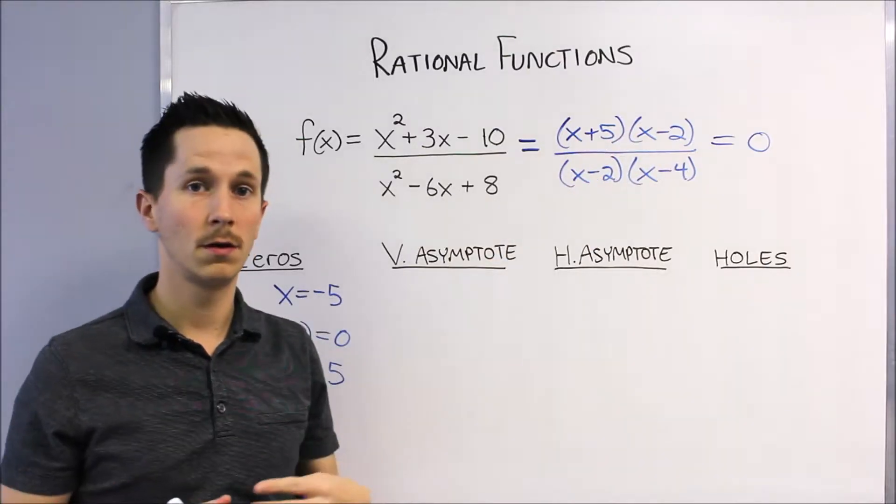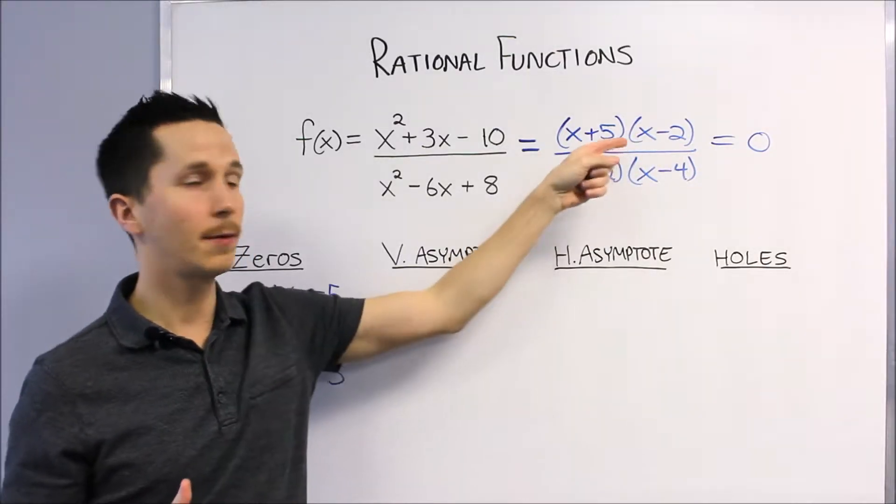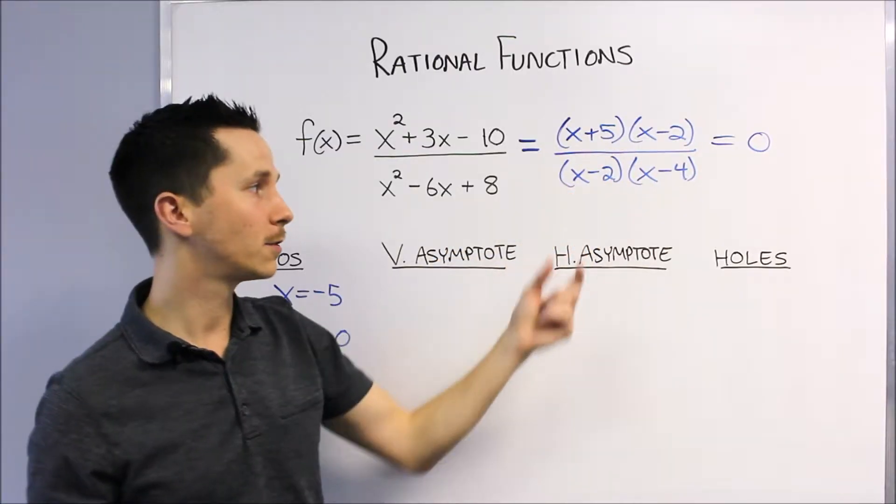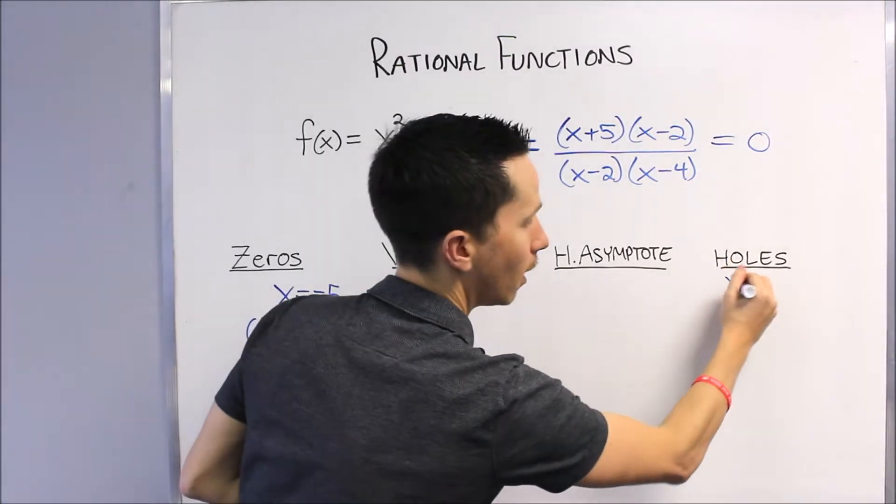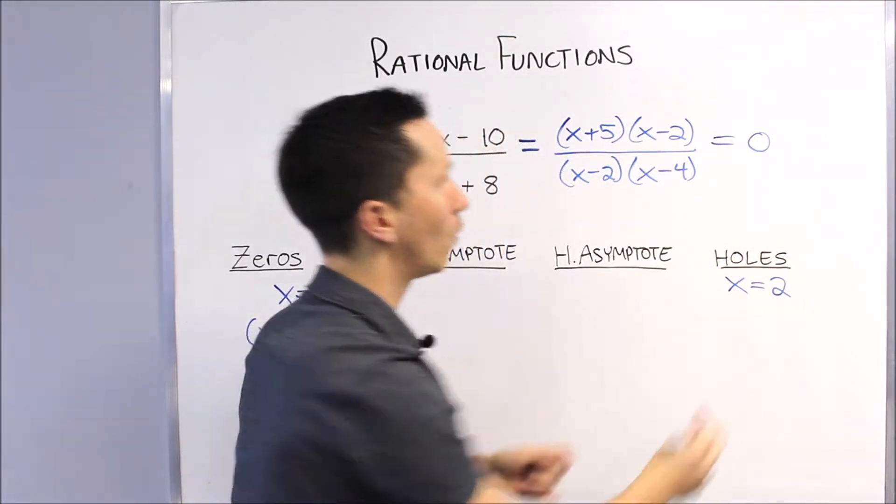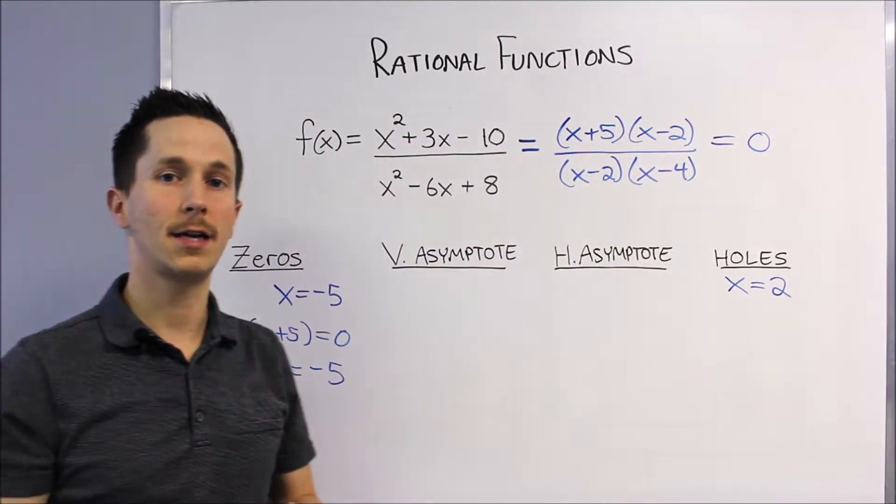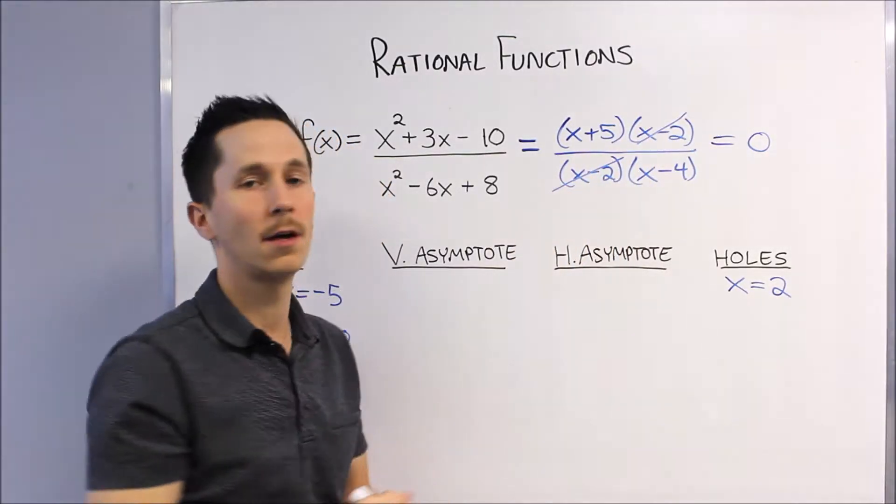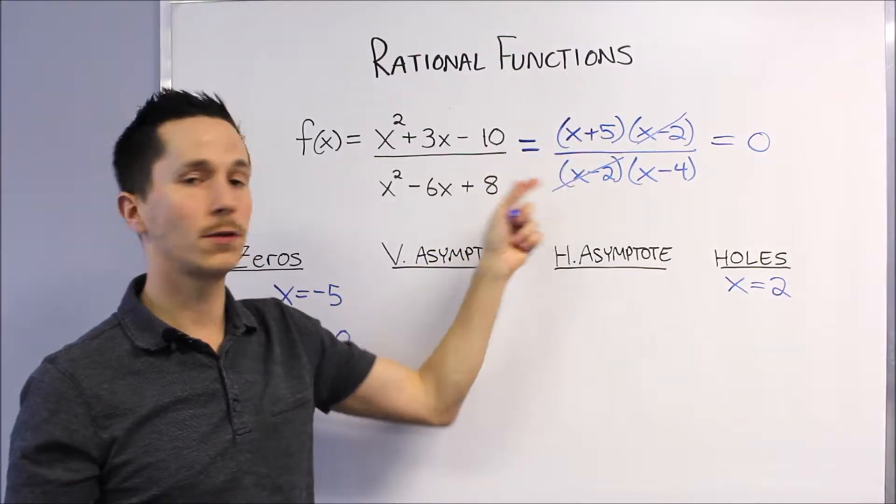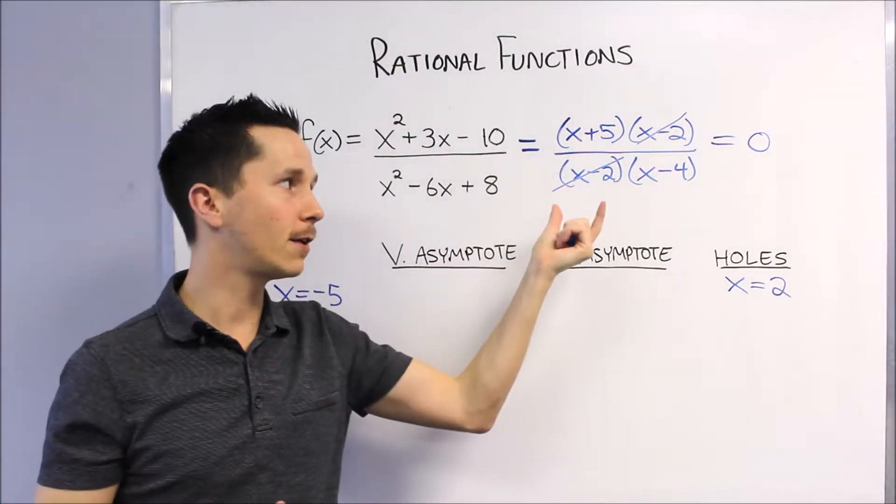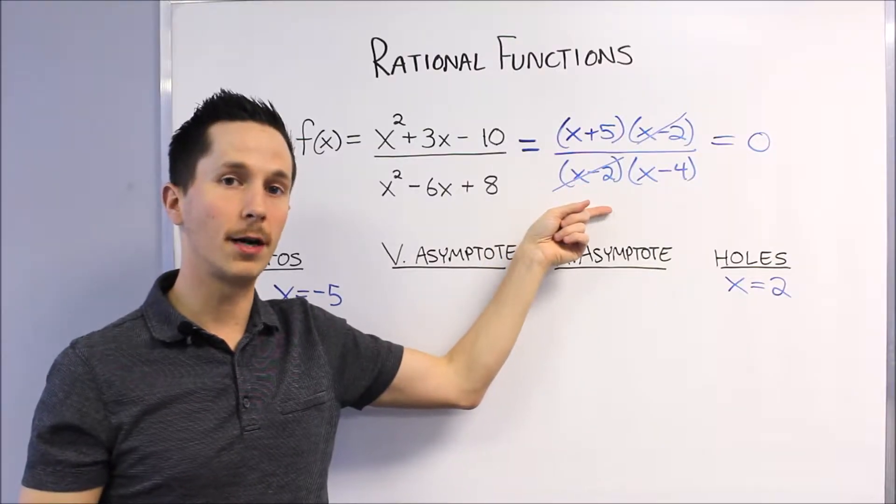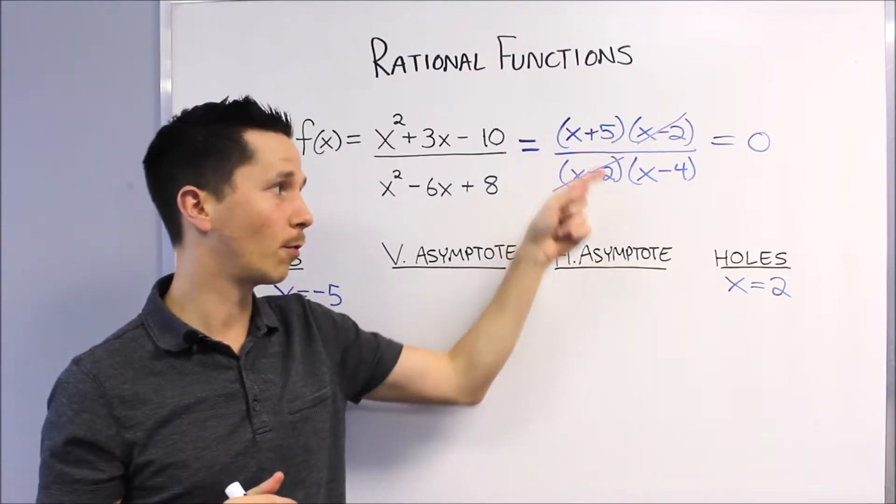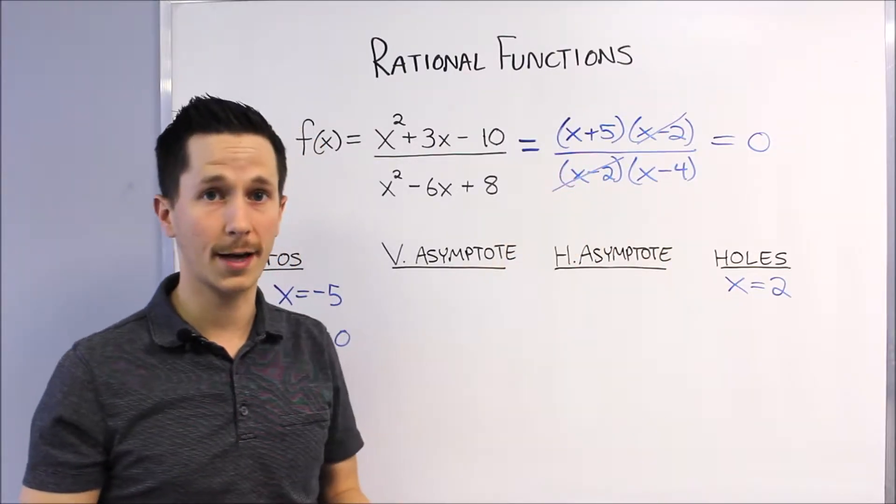So that's one of our zeros. Now the other question is, is x equals 2 a zero? Well it seems like it should be because it makes the numerator 0, but there's also an (x - 2) factor on the bottom, so that's actually going to become our x value of a hole in the graph. What that means is the graph is discontinuous at x equals 2. Yes, we can essentially cancel these out, but we have to remember that x equals 2 is not in the domain of this function because that would make the denominator 0. So it seems like they should just cancel out and never be seen again, but before we do that, we have to remember that there will be a hole at x equals 2.